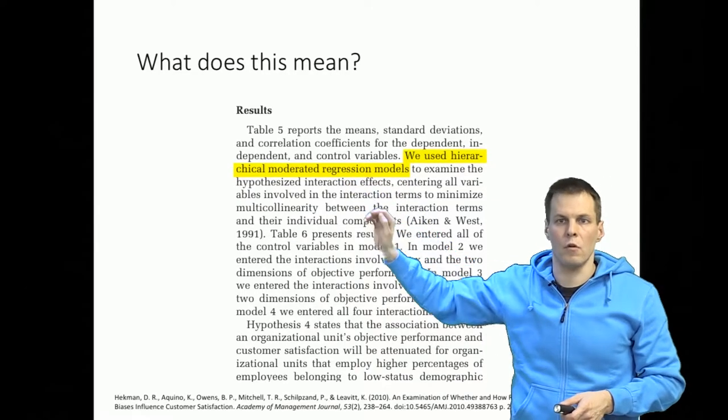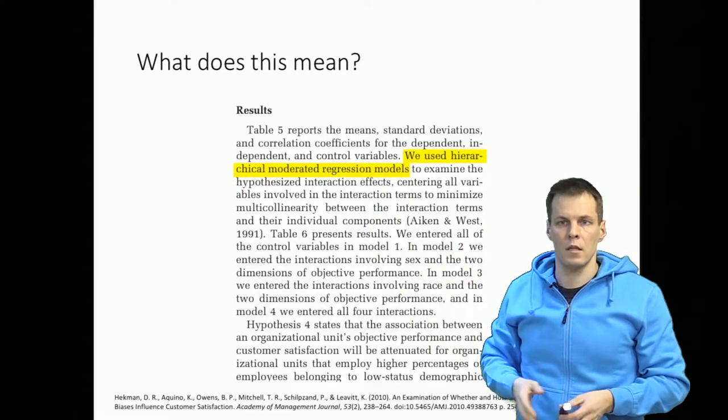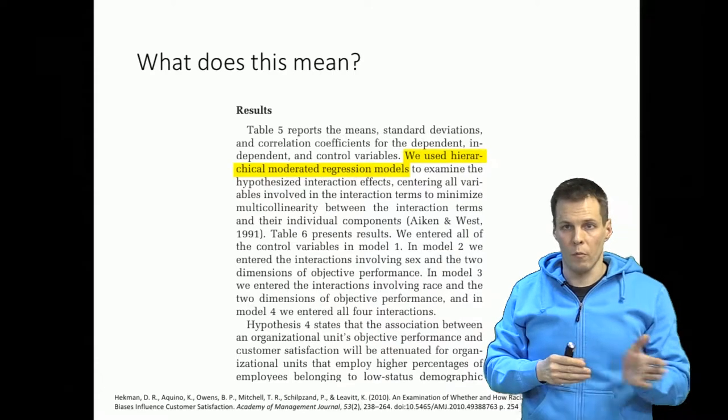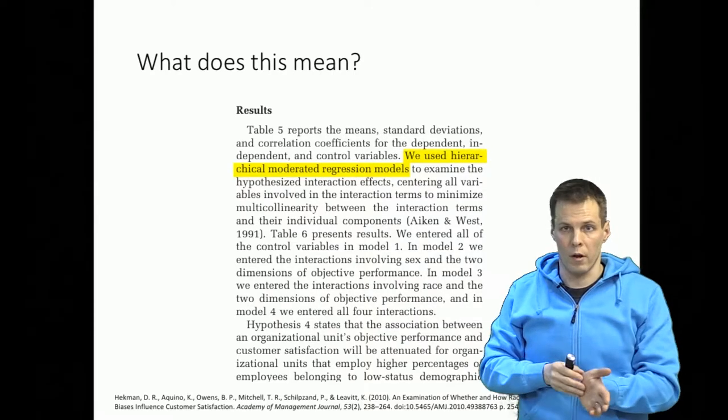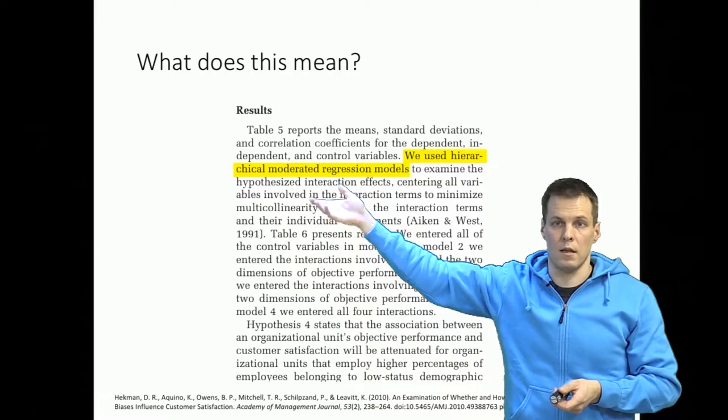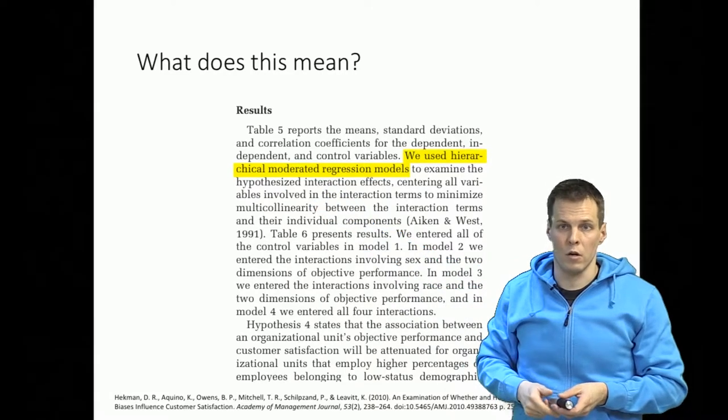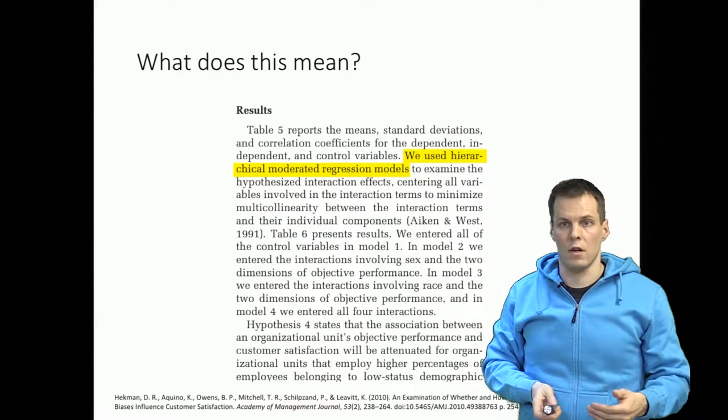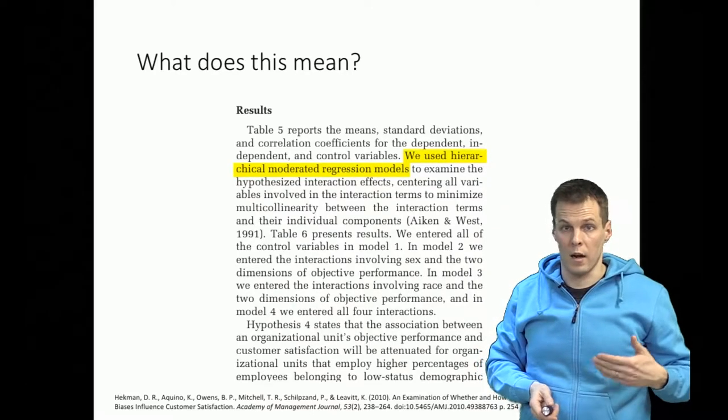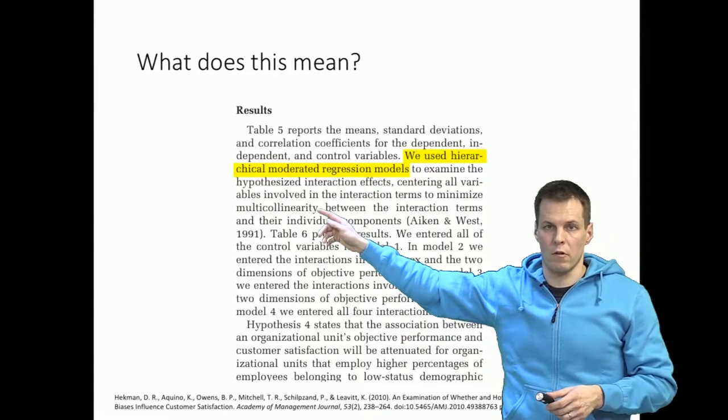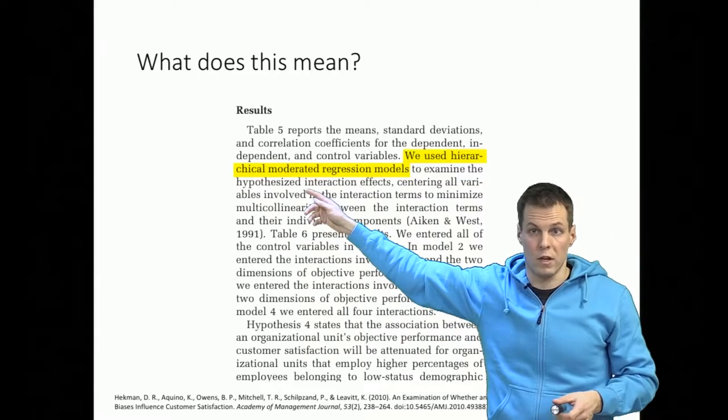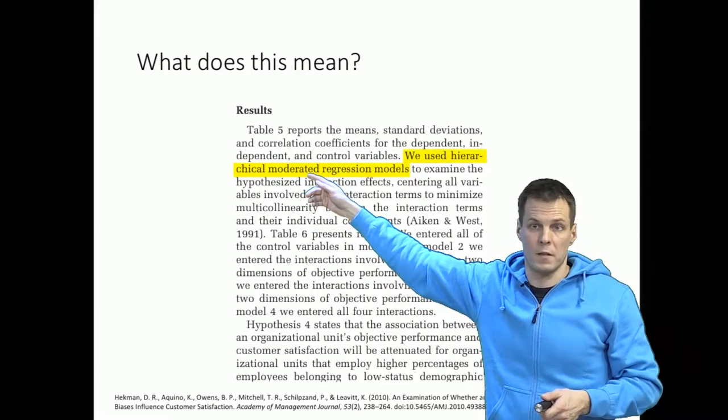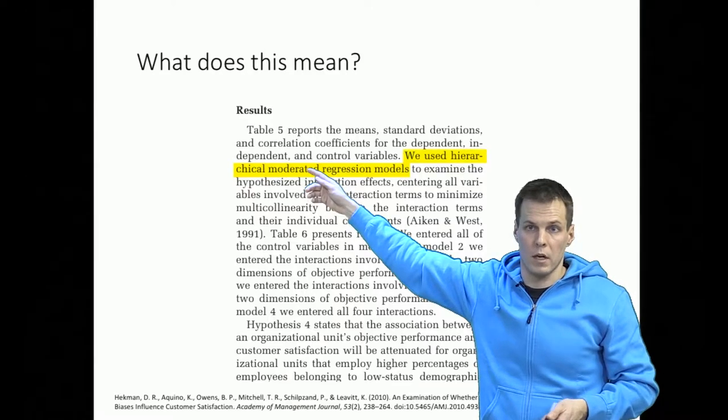The hierarchical here is the key term. It simply means that you are estimating multiple models, start with a simple one, then add more variables, compare, add more variables and compare. The moderated part here means that they have interaction terms in their model. They could just as well have said that they use regression analysis because we use regression analysis nearly always in a hierarchical way and it's obvious based on the regression results that they contain interaction terms. This is an unnecessarily complicated way of saying we did regression and estimated multiple models.